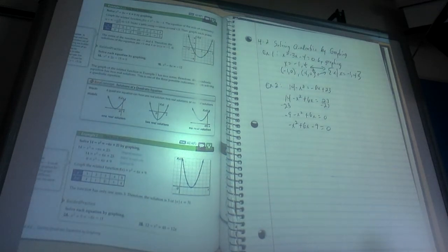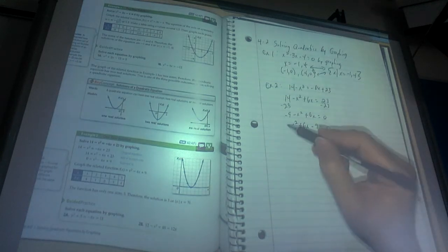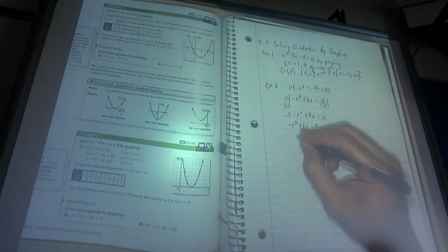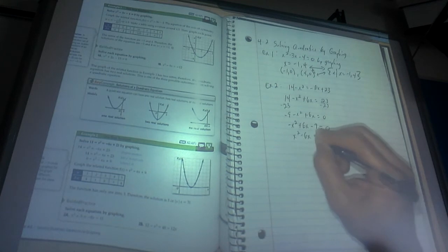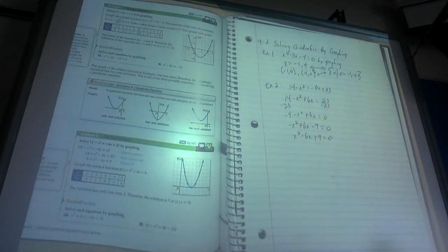because the roots are not affected by the way the graph opens, we would go ahead and flip all of these signs and say x squared minus 6x plus 9 equals 0, and we would go from there. All right,